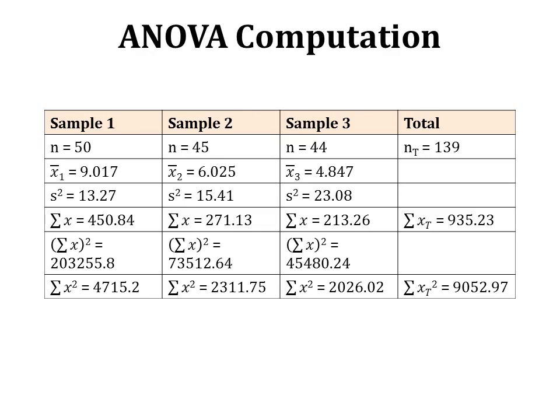These are the descriptive statistics — not raw observations, but statistics worked out from those observations. Remember: observations are your raw data, and descriptive statistics are derived from them. This table will be used for the ANOVA computation. The total number of observations in each sample are 50 in sample 1, 45 in sample 2, and 44 in sample 3, giving a grand total of 139.